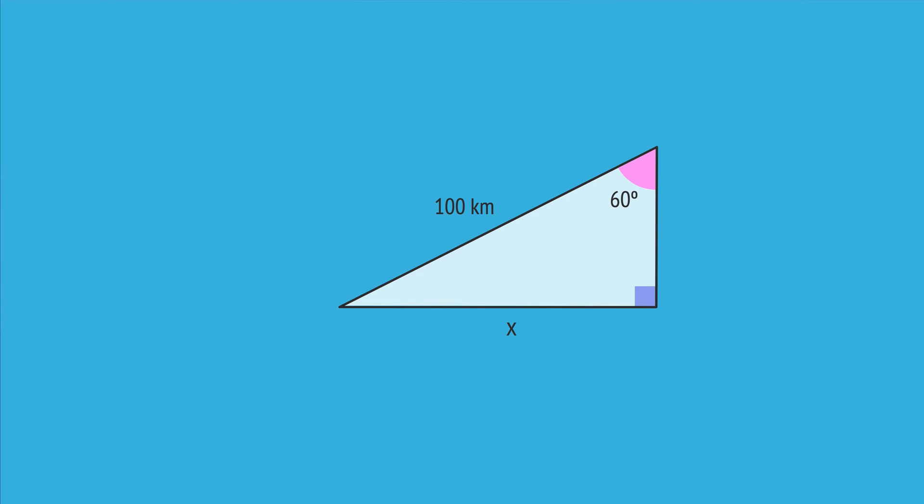We label the relevant sides, the hypotenuse and the opposite. And with these two sides, we choose the sine ratio.